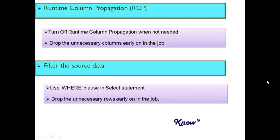The next tip is similar: filter the source data. Just as you take only the required columns, take only the required records. If you have 100 records in your source but only need some of them, do not carry all 100 through all calculations and apply the filter at the end. Do this as soon as possible — put your WHERE clause in the SELECT query for a database source, or use a Filter stage or Transformer stage constraints.